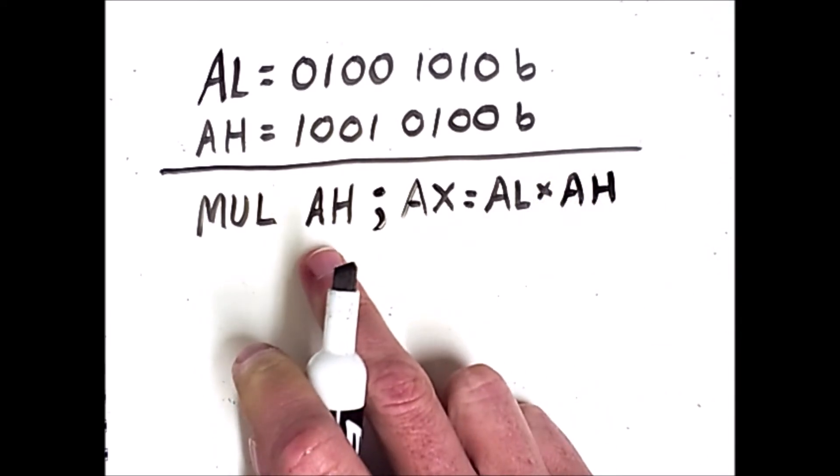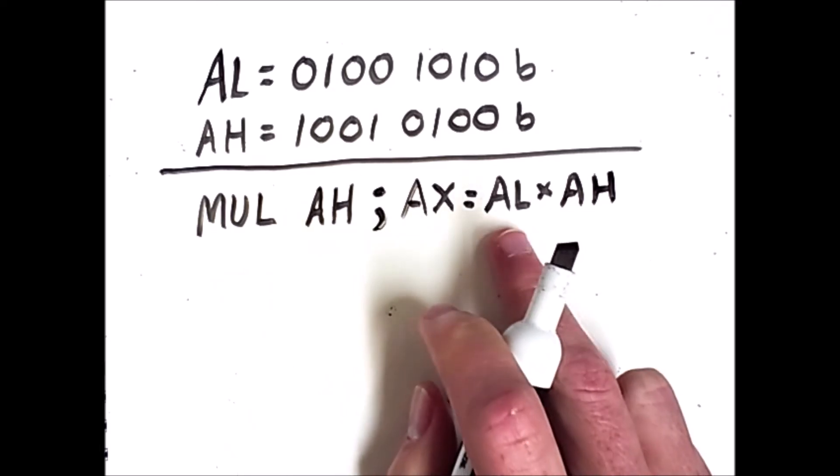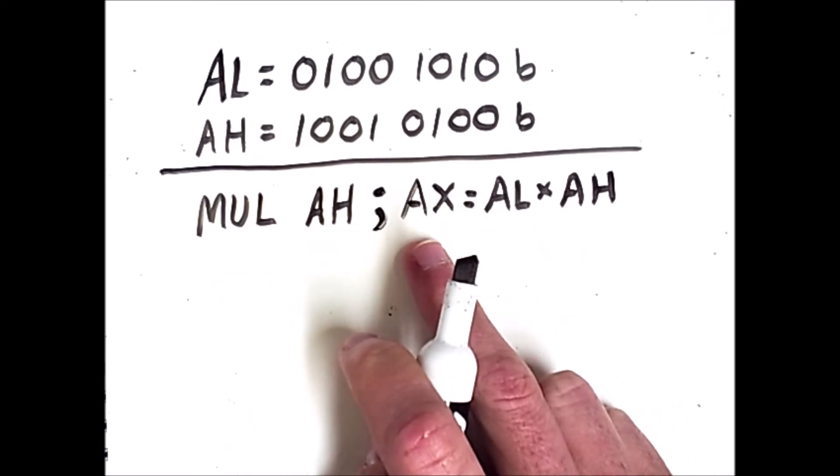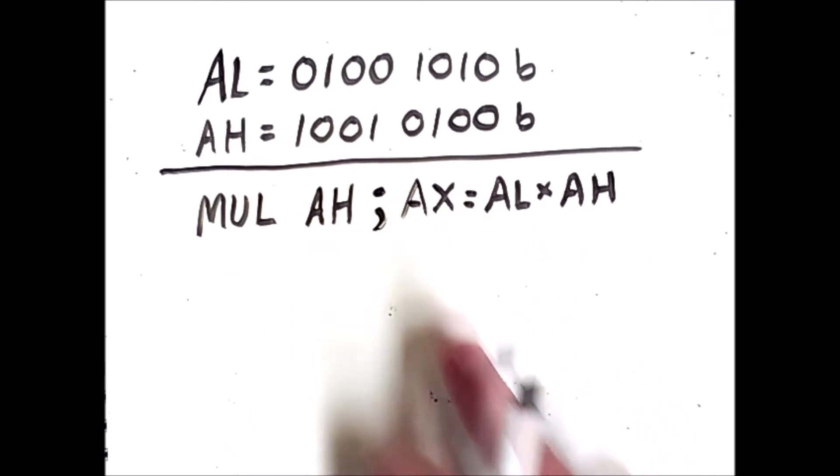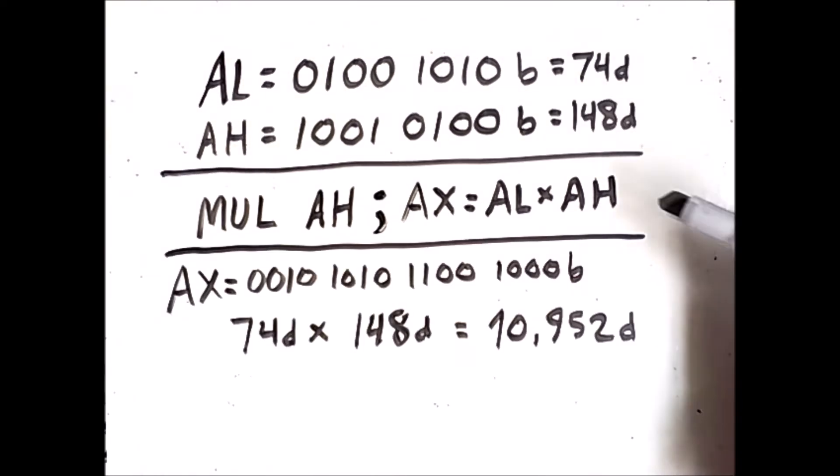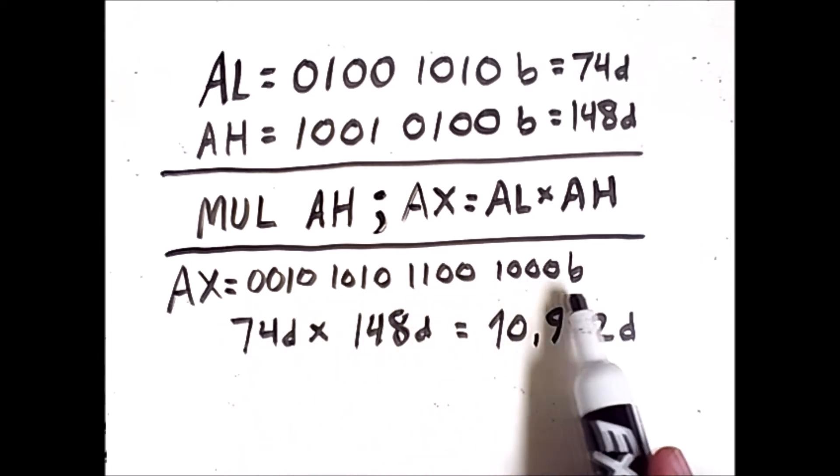So AH is specified here. AL and AX are implicit. So if I execute this command, the result is the following. After this operation, the register AX will store this long sequence of binary numbers.